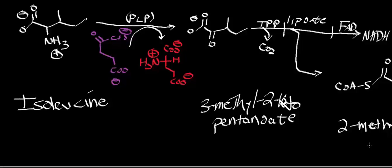Our first reaction is going to be branched-chain transaminase. It's going to use alpha-ketoglutarate, generate a glutamate, and we're going to end up with this molecule right here called 3-methyl-2-ketopentanoate. On isoleucine, we have this amine, and we should expect to find the amine on our glutamate. For the purposes of drawing structures on an exam, you can effectively think of these as substitutions between amines and carbonyls. Remember that all transaminases are pyridoxal phosphate (PLP) dependent.